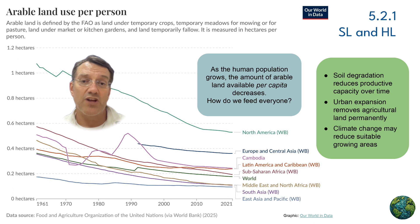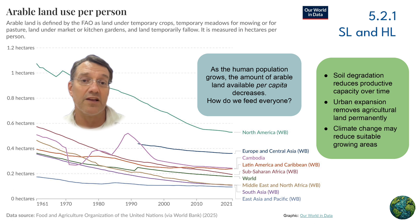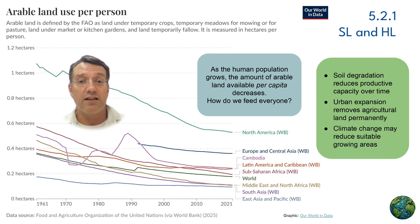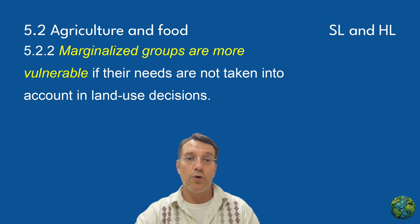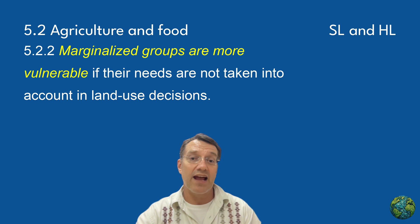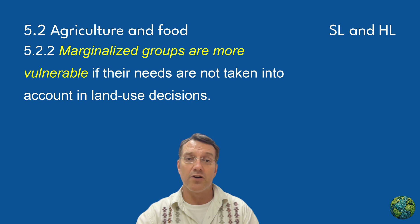But the challenges don't stop at population growth. Soil degradation reduces the productive capacity of existing farmland over time. Urban expansion permanently removes agricultural land as cities grow, and climate change may actually reduce the areas suitable for growing crops. This brings us to an important point about equity and justice in land use: when decisions are made about how to use land, marginalized groups often become more vulnerable if their needs aren't considered.